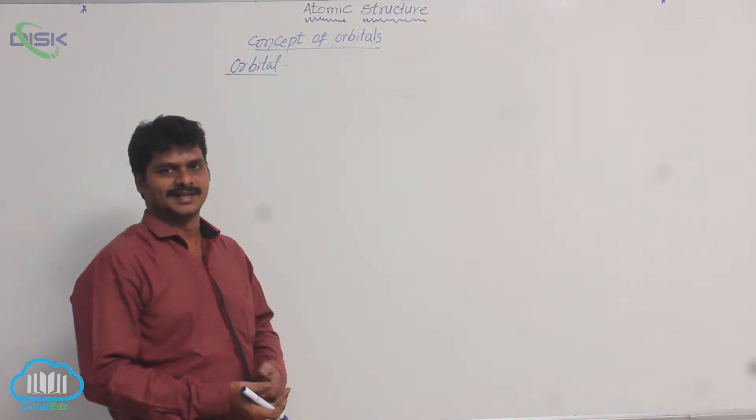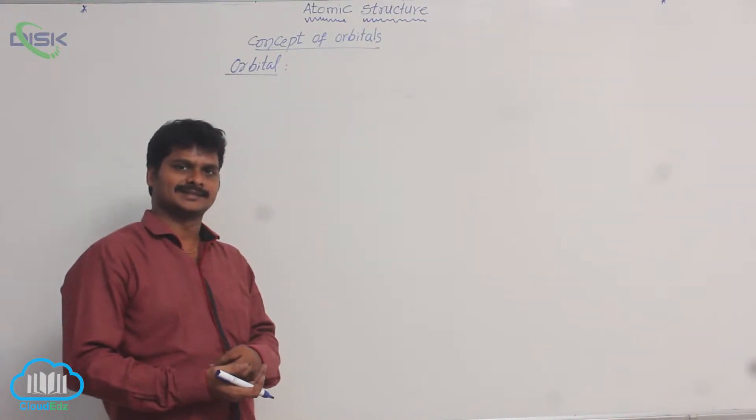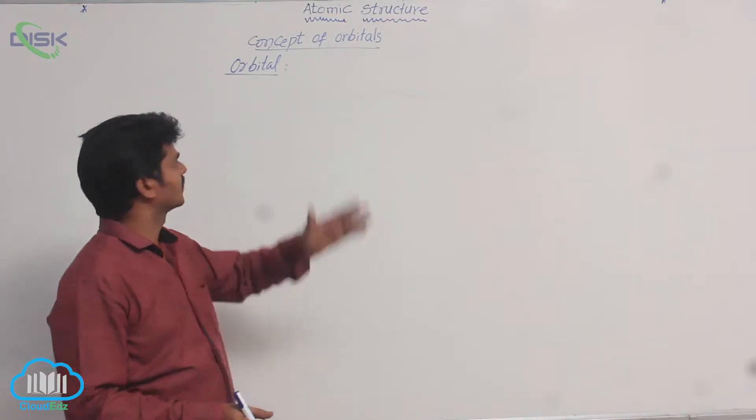As per Bohr's theory, it's a circular path. The circular path around the nucleus in which electron revolves is said to be orbit. What is orbital?